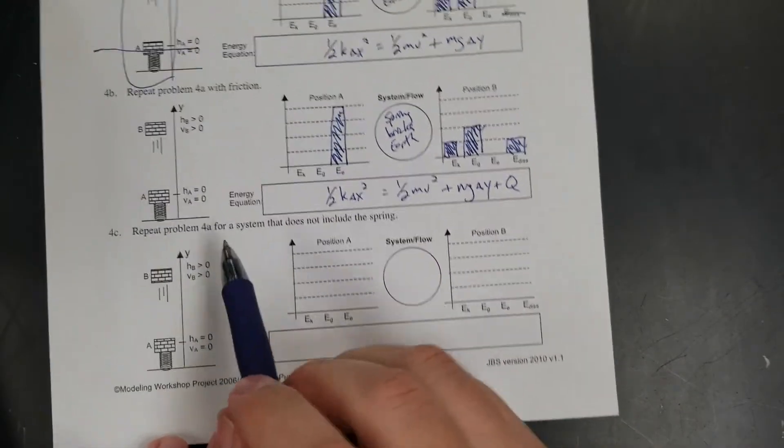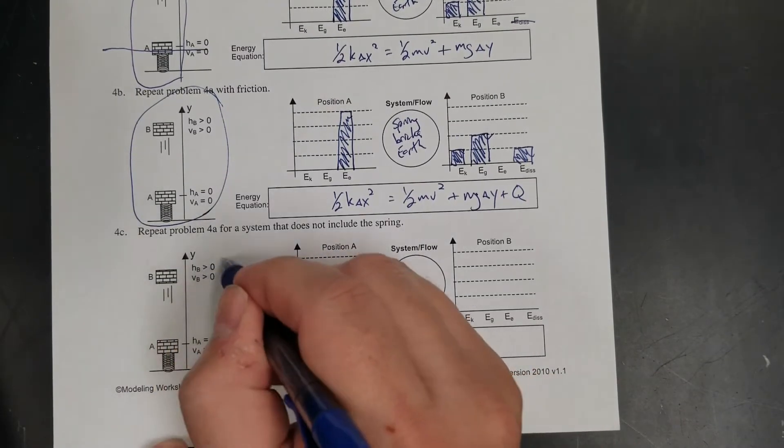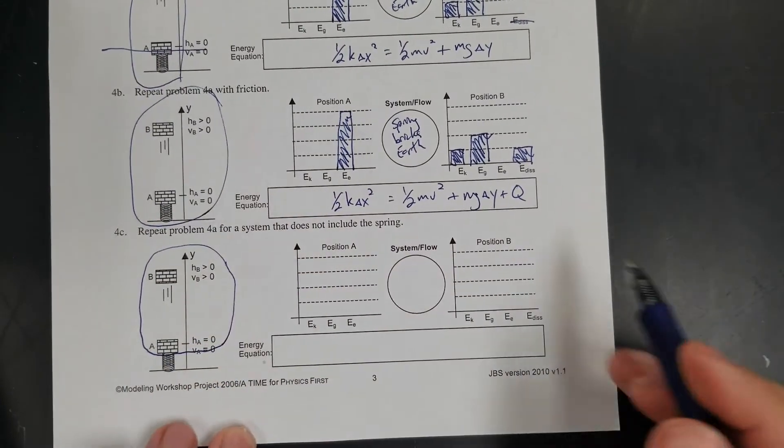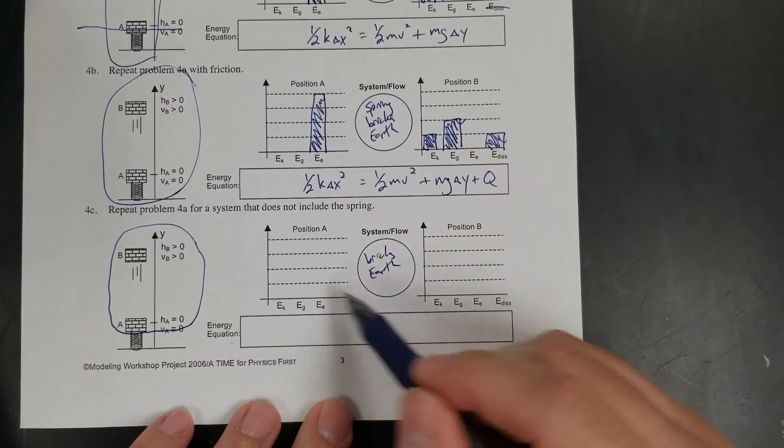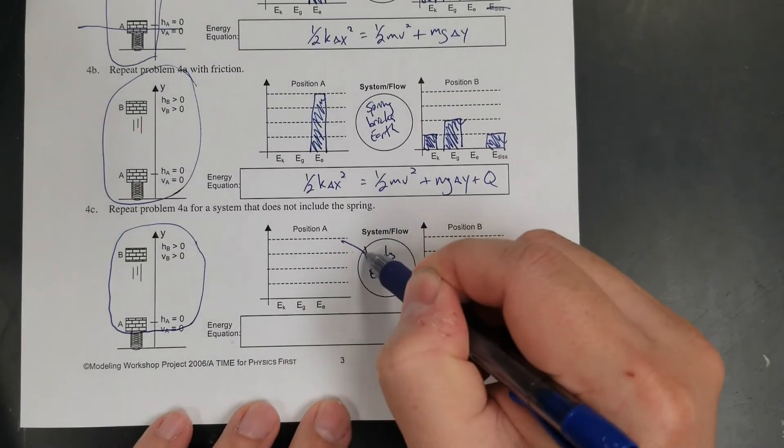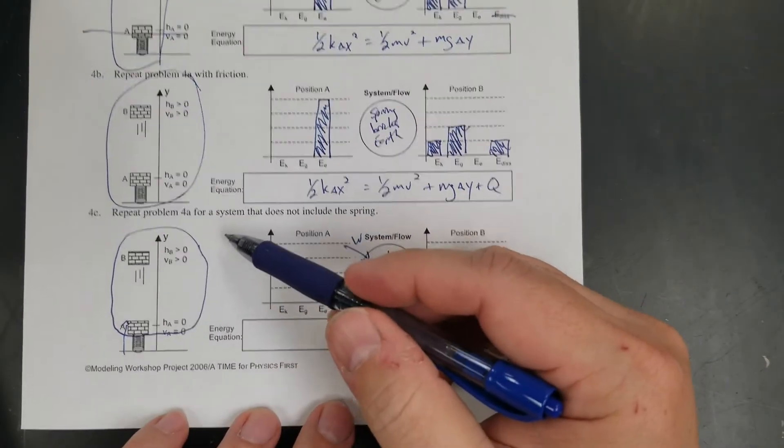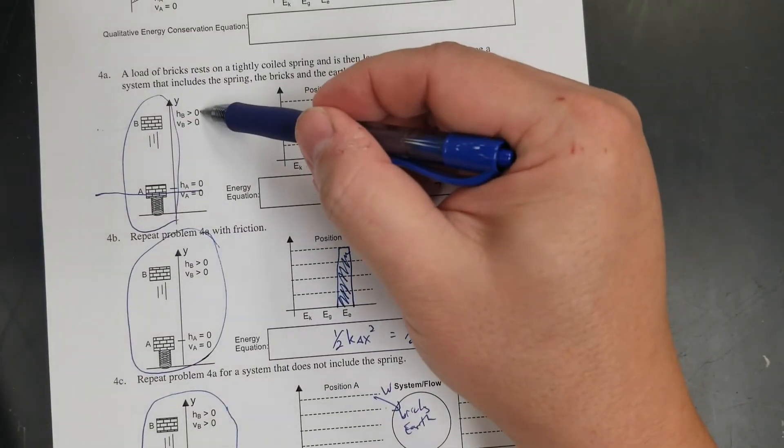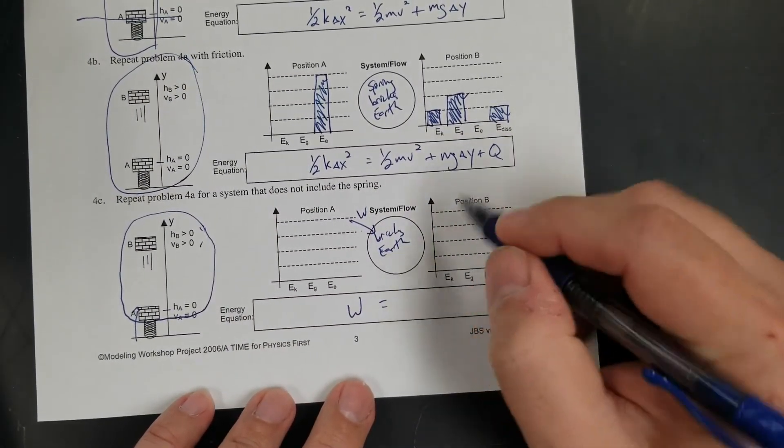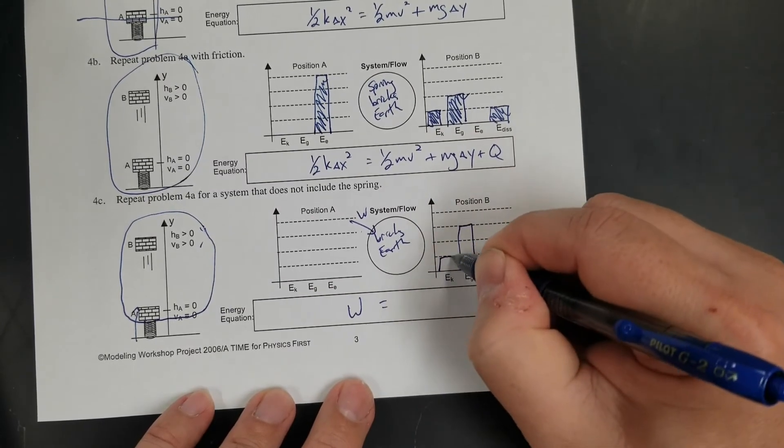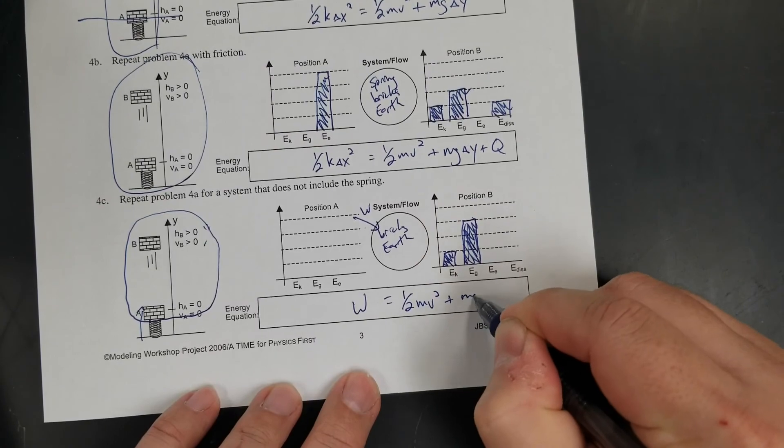Let's do this one. In this one, the system was the whole thing. Now I'm changing the system. Repeat 4a for a system that does not include the spring. Now this is my system - just bricks and earth. It didn't start with anything then because energy is going to have to enter the system as work. I'm going to say work equals, and then at the end, same as 4a. The height is greater than zero, and the velocity is still greater than zero. I've got potential and kinetic, gravitational potential. So we'll go three and one again. And then one-half mv squared plus mg delta y.